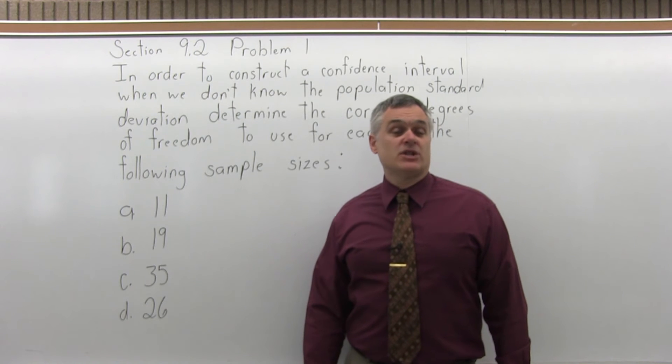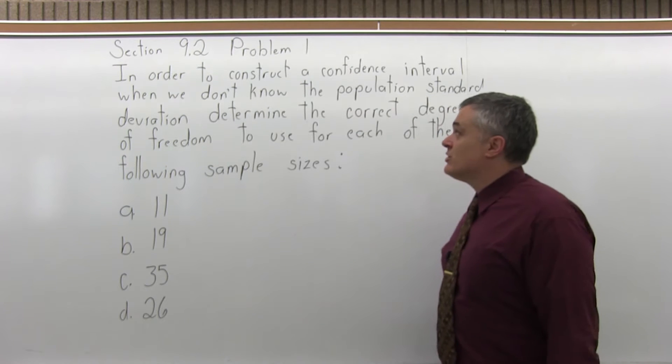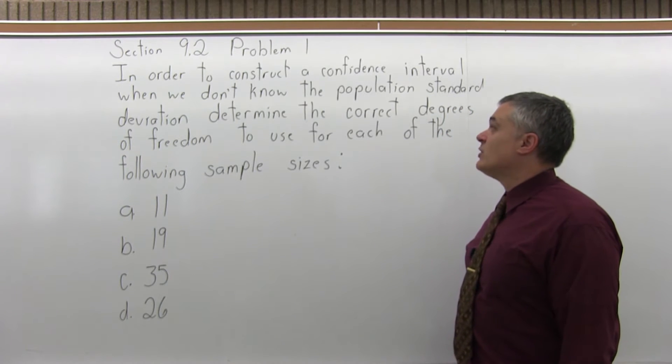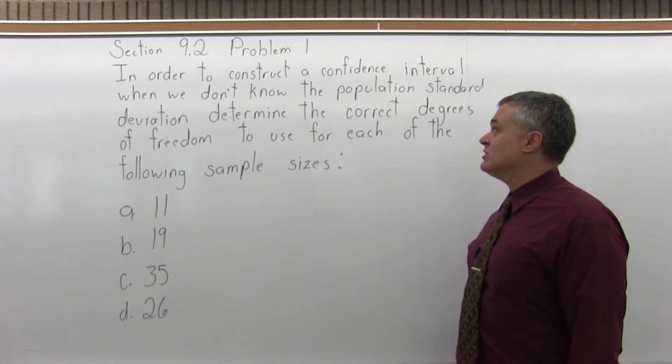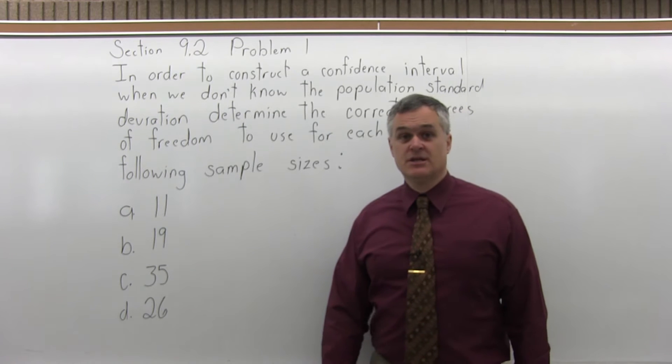This is Section 9.2, Problem 1. It says, in order to construct a confidence interval when we don't know the population's standard deviation, determine the correct degrees of freedom to use for each of the following sample sizes.